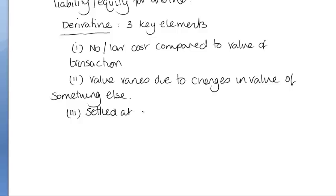And it's settled at a future date. So whenever you're looking at something and you think it might be a derivative, go through the three elements to see whether we've satisfied all three items.